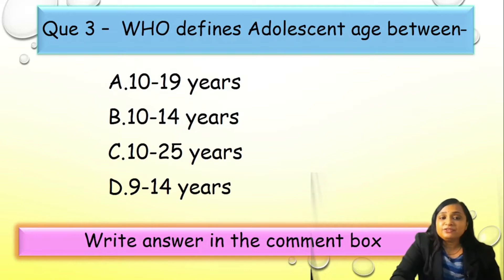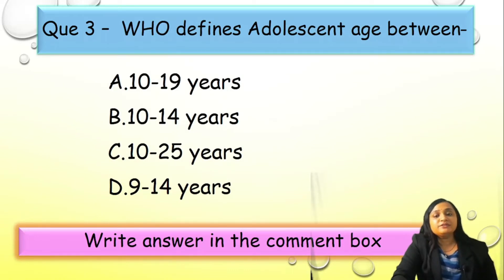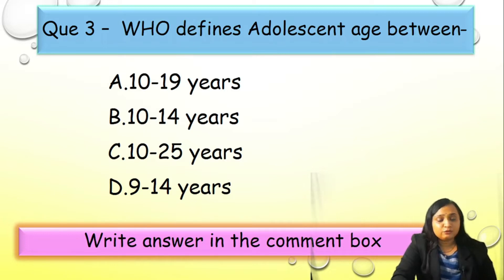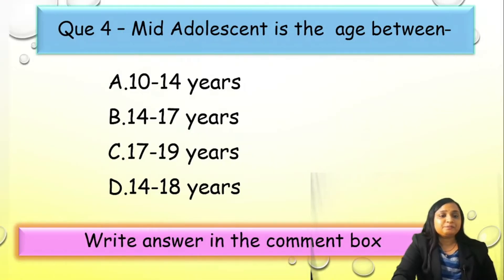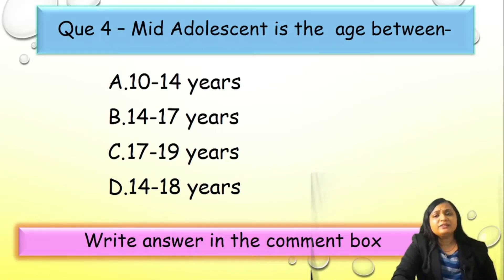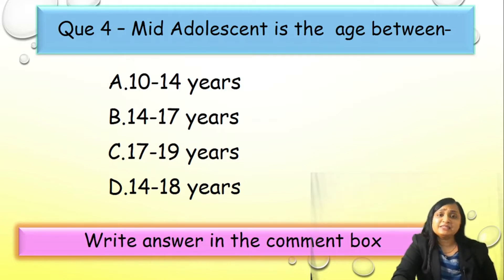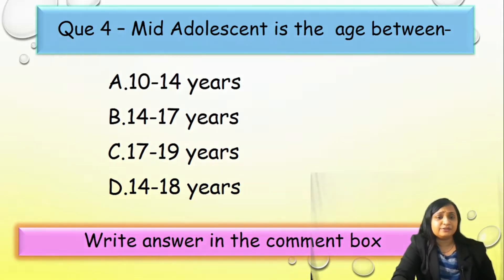Question 3: World Health Organization defines adolescent age between — A) 10 to 19 years, B) 10 to 14 years, C) 10 to 25 years, or D) 9 to 14 years. Question 4: mid-adolescent is the age between — A) 10 to 14 years, B) 14 to 17 years, C) 17 to 19 years, or D) 14 to 18 years.